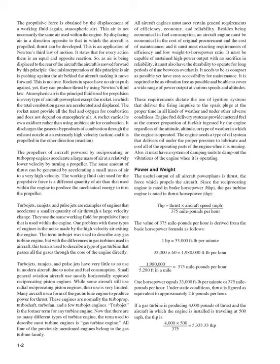The propellers of aircraft powered by reciprocating or turboprop engines accelerate a large mass of air at a relatively lower velocity by turning a propeller. The same amount of thrust can be generated by accelerating a small mass of air to a very high velocity. Turbojets, ramjets, and pulsejets are examples of engines that accelerate a smaller quantity of air through a large velocity change; they use the same working fluid for propulsive force that is used within the engine. One problem with these types of engines is the noise made by the high velocity air exiting the engine. The term turbojet was used to describe any gas turbine engine, but is now used specifically to describe a type that passes all gases through the core of the engine directly.